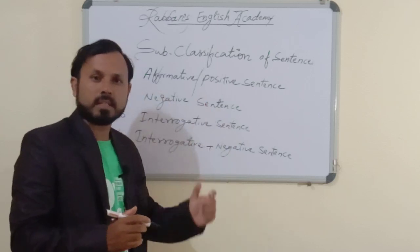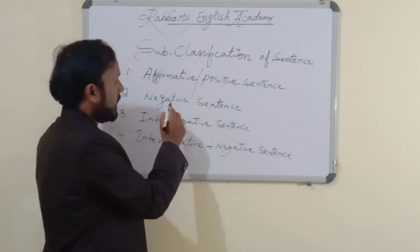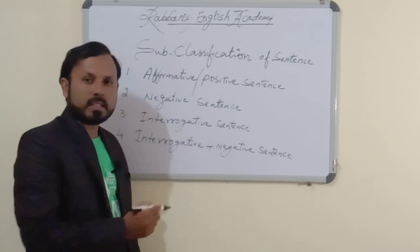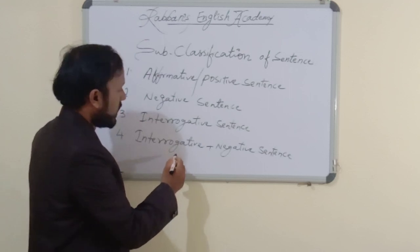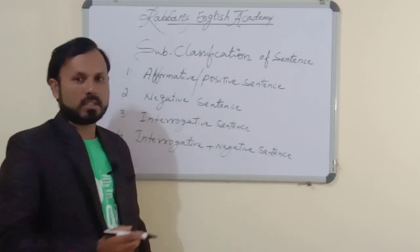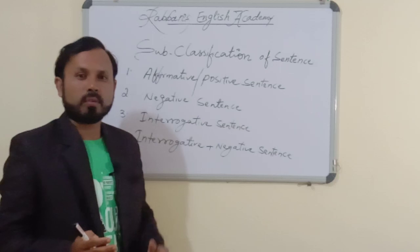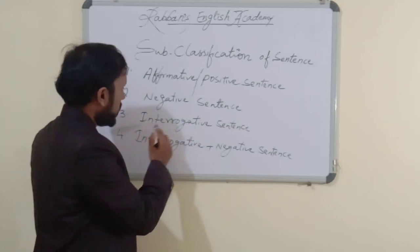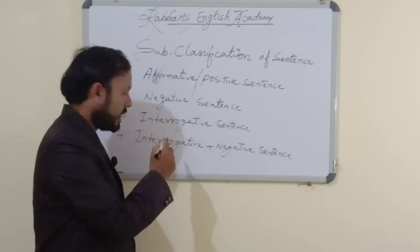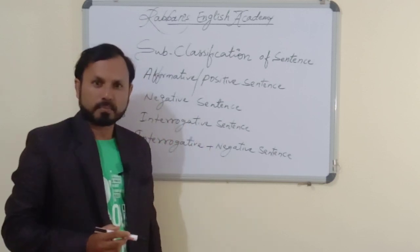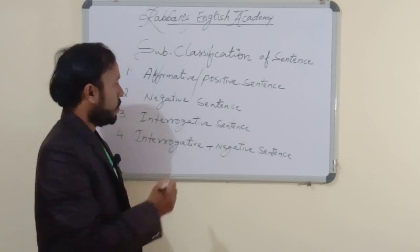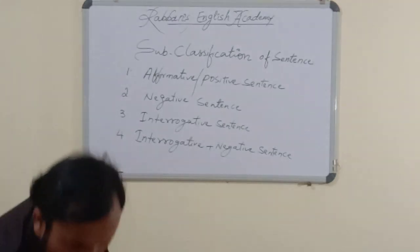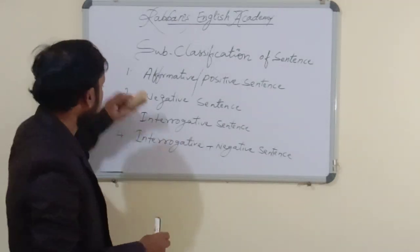So it is positive sentence. Number two is negative sentence. Number three is interrogative sentence. Number four is interrogative plus negative sentence. So how are you going to make positive sentence, negative sentence, interrogative sentence, and interrogative negative sentence? Let me write here and give you examples also. My dear, in Hindi also, we are talking in four types.